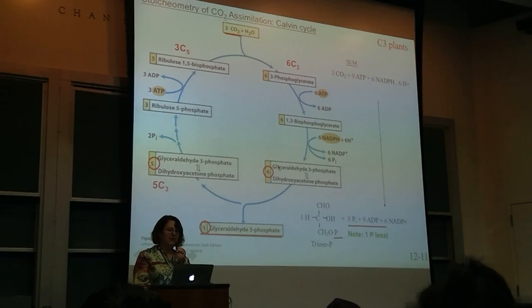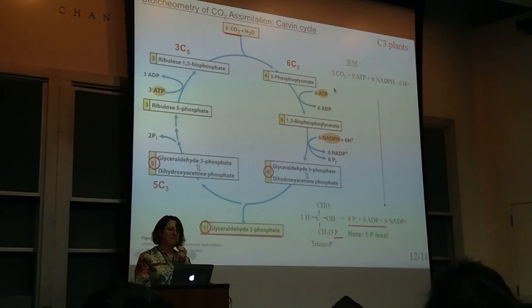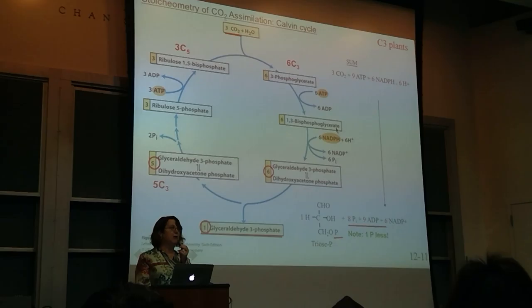From there we move through the cycle and end up with glyceraldehyde 3-phosphate (G3P), one of which is pulled off and the rest recycles. We talked about the energetics: you have 2 ATP for every CO2 coming in, so 1 ATP per reaction for the 3-PGA. For every 1 CO2, you get 2 3-PGA and you need 2 ATPs.